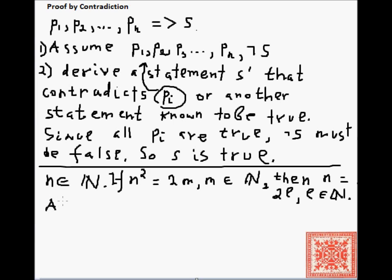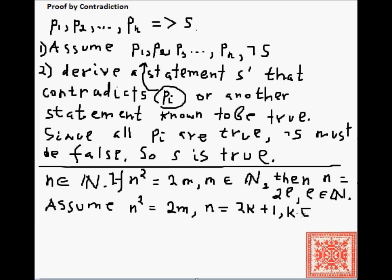Let's use the proof by contradiction method. We will assume that the square of a natural number is even — so n squared equals 2m. And toward a contradiction, we will assume the negation of S: that n is equal to 2k plus 1, where k is a natural number. In other words, n is an odd number, which negates the statement that n is equal to 2 times l.